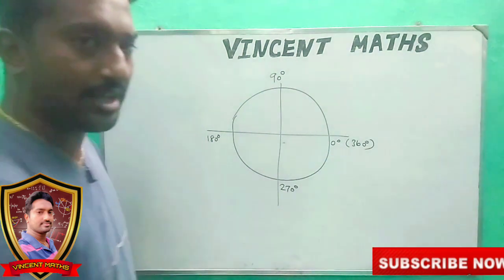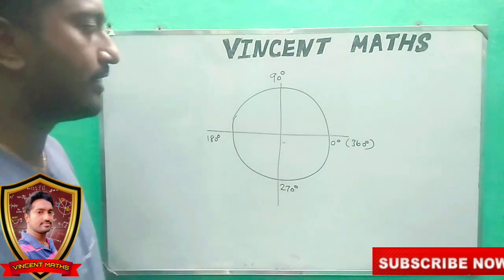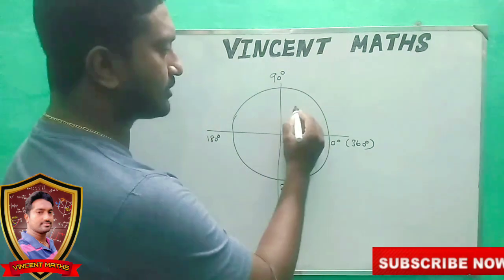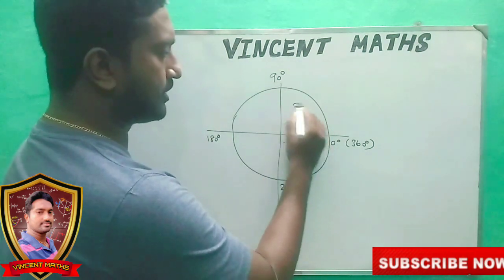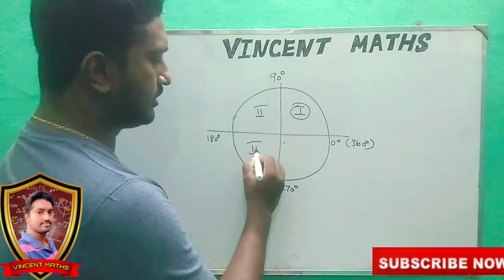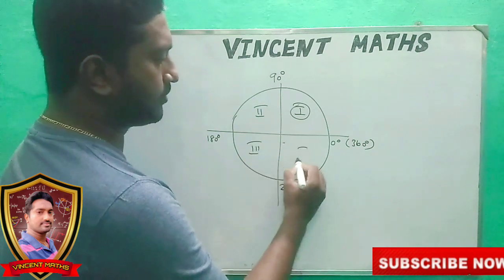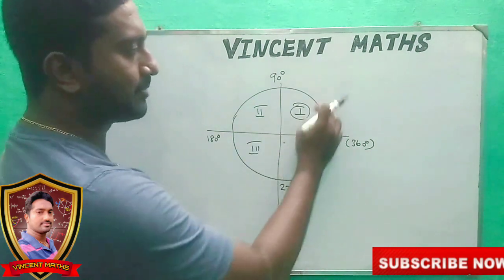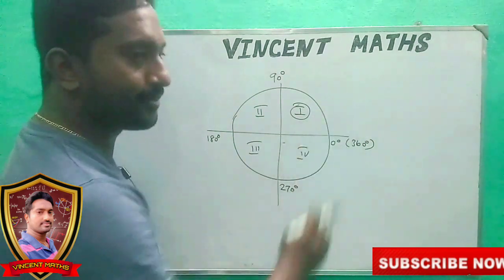Now, what we are doing in this place — this is the 1st quadrant, this is the 2nd quadrant, this is the 3rd quadrant, and this is the 4th quadrant. So what do we need to do in this place?